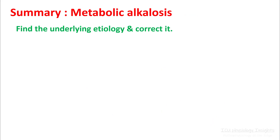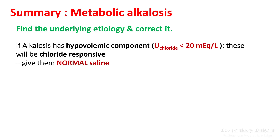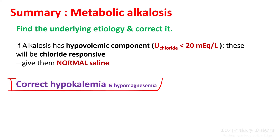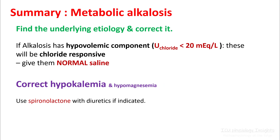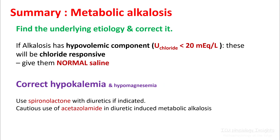To summarize: finding the underlying etiology is very important in metabolic alkalosis. If the alkalosis has a hypovolemic component, these patients will be chloride-responsive and you can give them normal saline. Correct hypokalemia and hypomagnesemia — this is really important. You can use spironolactone with diuretics if indicated, and you can use acetazolamide, but understand its use and its limitations. Thank you.